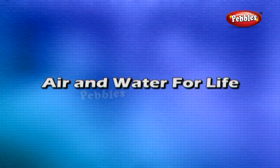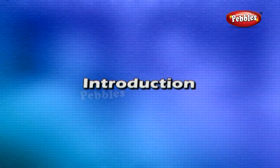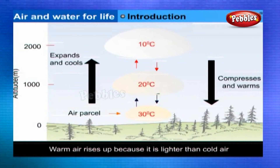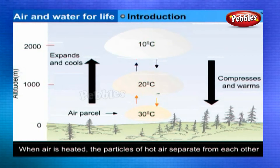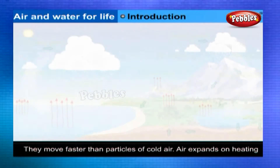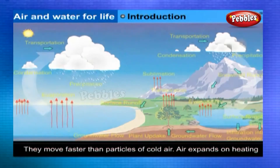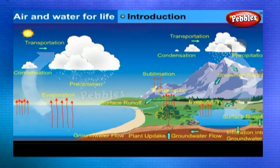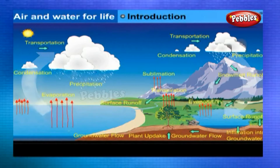Warm air rises up because it is lighter than cold air. When air is heated, the particles of hot air become further apart from each other and move faster than particles of cold air. Air expands on heating. When air is cooled, it contracts — particles of cold air come nearer to one another and take up less space.